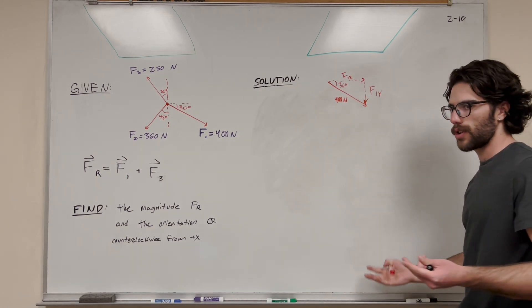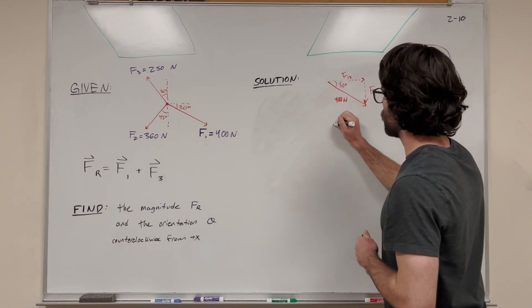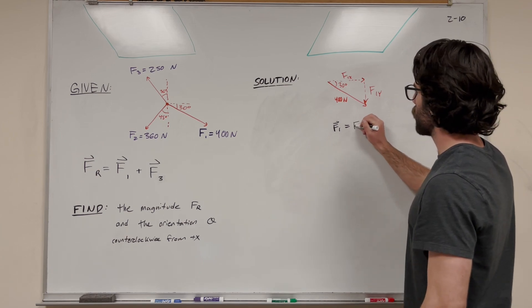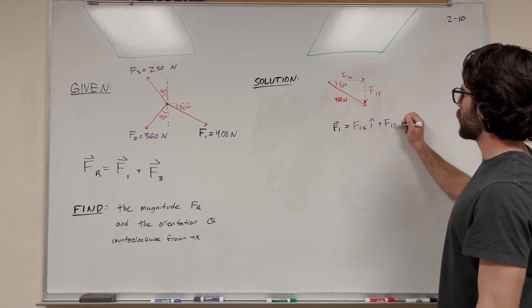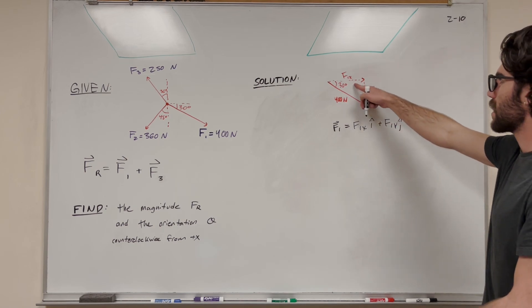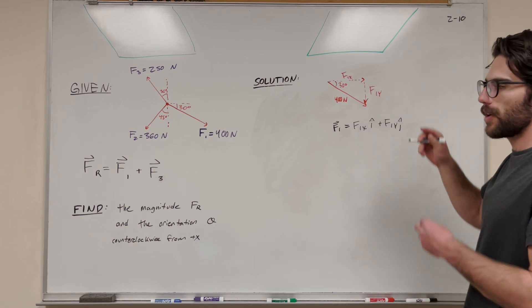So we need to find F1x and F1y. We can break this vector down into its components. F1 equals F1x times i plus F1y times j. The i component is the x component and the j component is the y component.